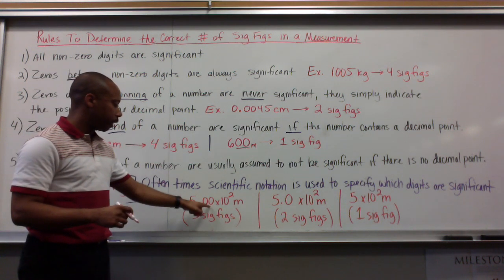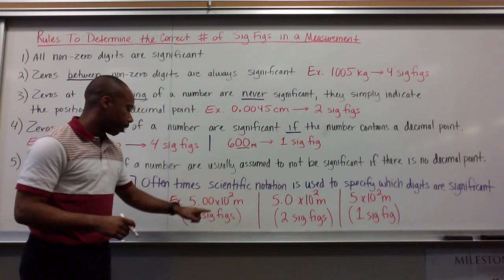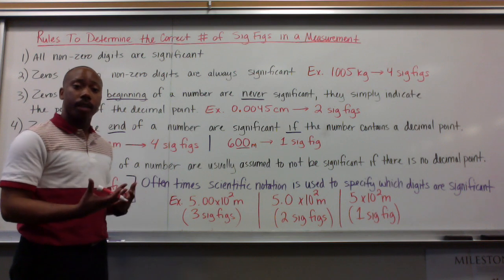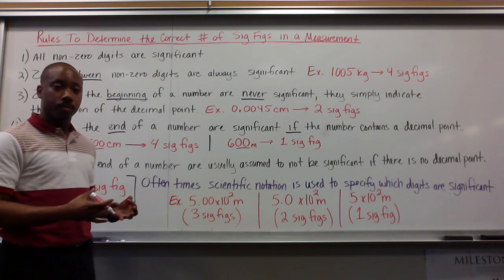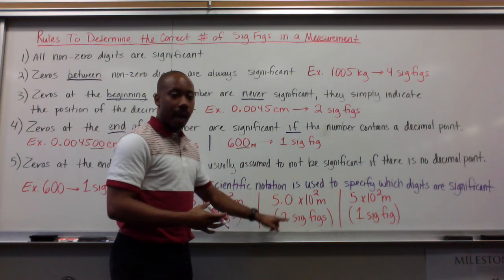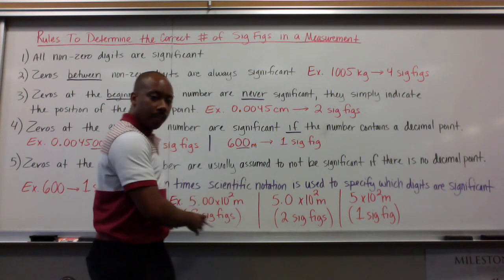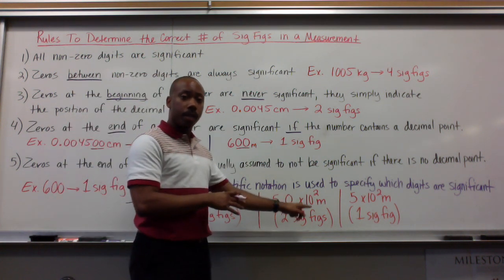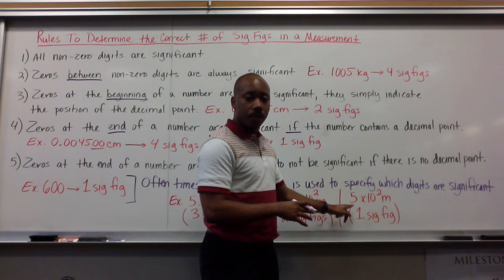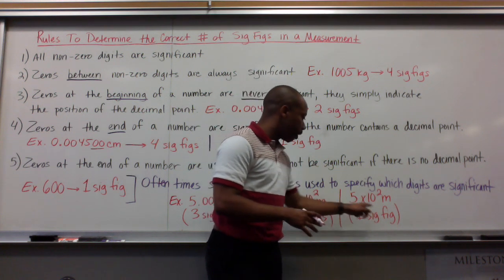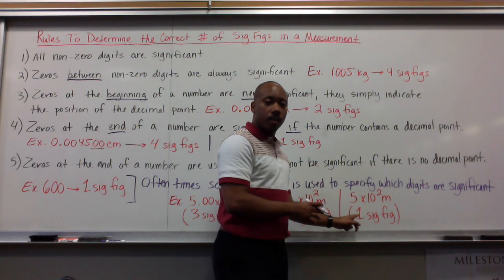For example, 5.00 times 10 to the second meters has three significant figures — these zeros come after a decimal point, so they're significant, and this equals 500 meters. If I had 5.0 times 10 to the second meters, I have two significant figures — still 500 meters, just expressed differently. And 5 times 10 to the second meters has one significant figure. Significant figures tell you how precise your measurement is, meaning how precise the instrument you used to measure is.